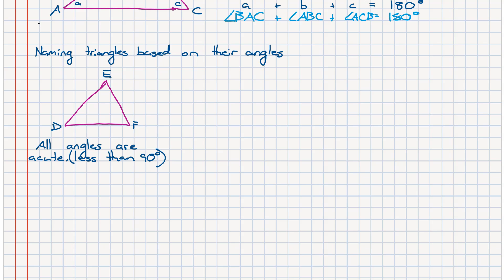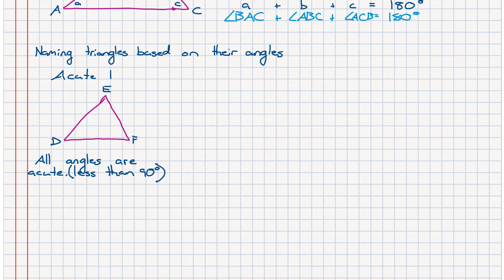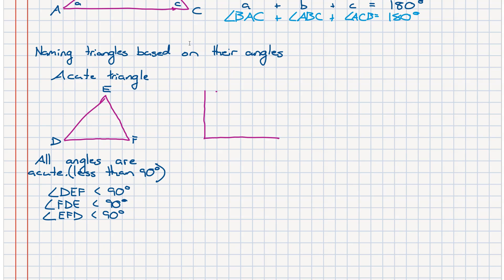A triangle where all angles are less than 90 degrees we call an acute triangle. The second type of triangle, quite a popular one at Year 9, is a triangle where there is a 90-degree angle in it. This particular type we call a right-angled triangle, and what makes it a right-angled triangle is that there's a 90-degree angle in it.